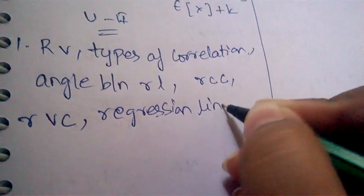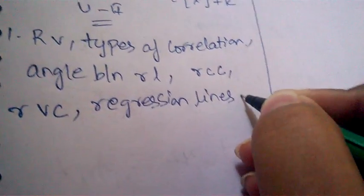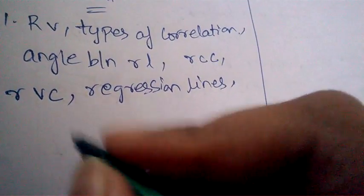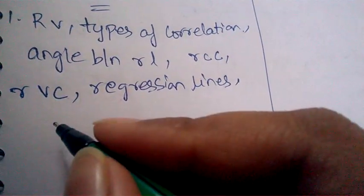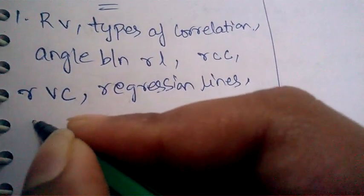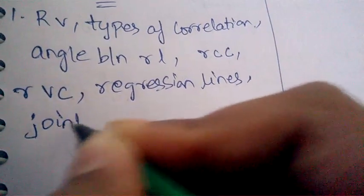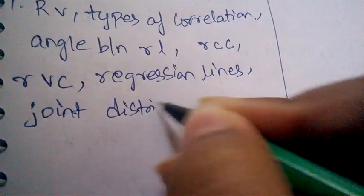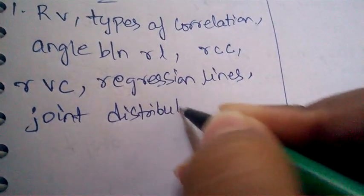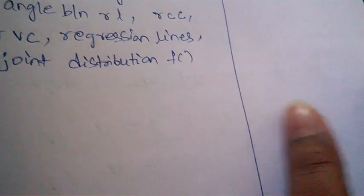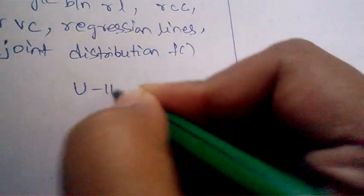Properties of regression lines and properties of joint distribution function. These are a few important questions from unit 2.